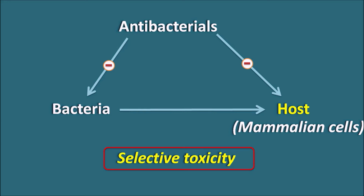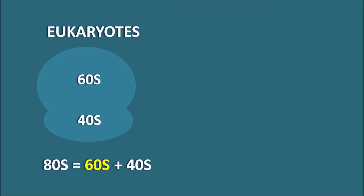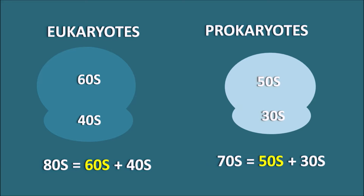Protein synthesis in the bacteria is somewhat different from the eukaryotes, which can be used as a point of difference for the action of many antibiotics. In eukaryotes, the ribosome is made up of two subunits: the 60S subunit and 40S subunit, so totally it is an 80S complex. But in prokaryotes or bacteria, the ribosome is made up of two smaller subunits — 50S subunit and 30S subunit — so totally it is a 70S complex. This is an important point of difference that can be used to target bacteria specifically, producing less toxicity to the host cells.